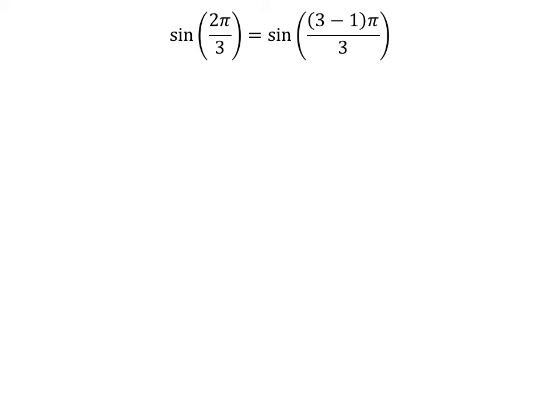We know 3 minus 1 is equal to 2, so sine of 2 times pi upon 3 is equal to sine of 3 minus 1 times pi upon 3. Expanding the numerator, we get sine of 2 times pi upon 3 is equal to sine of 3 times pi minus pi upon 3.